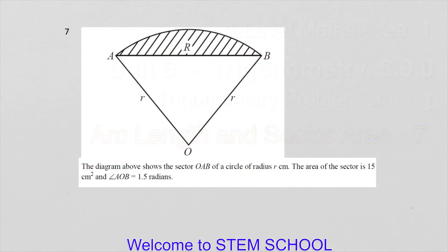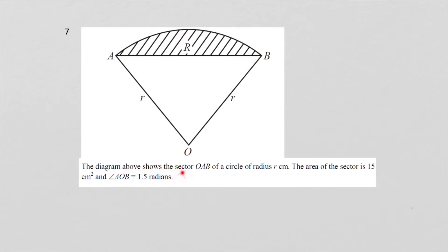The diagram above shows the sector OAB of a circle of radius R centimeters. The area of the sector is 15 centimeters squared, and the angle AOB equals 1.5 radians.